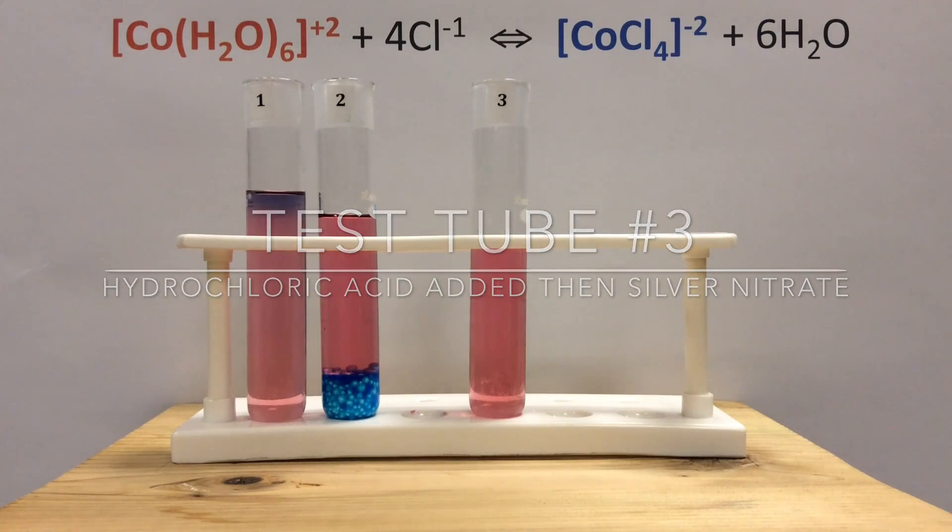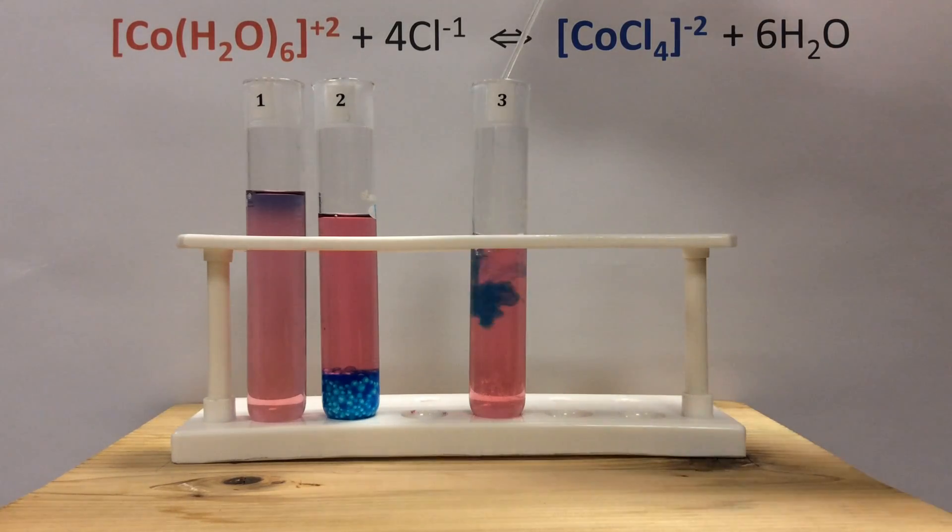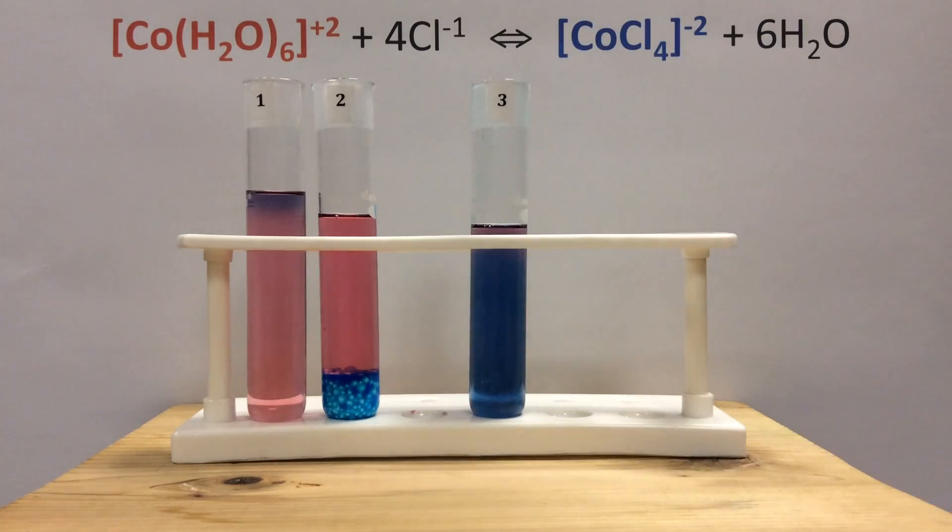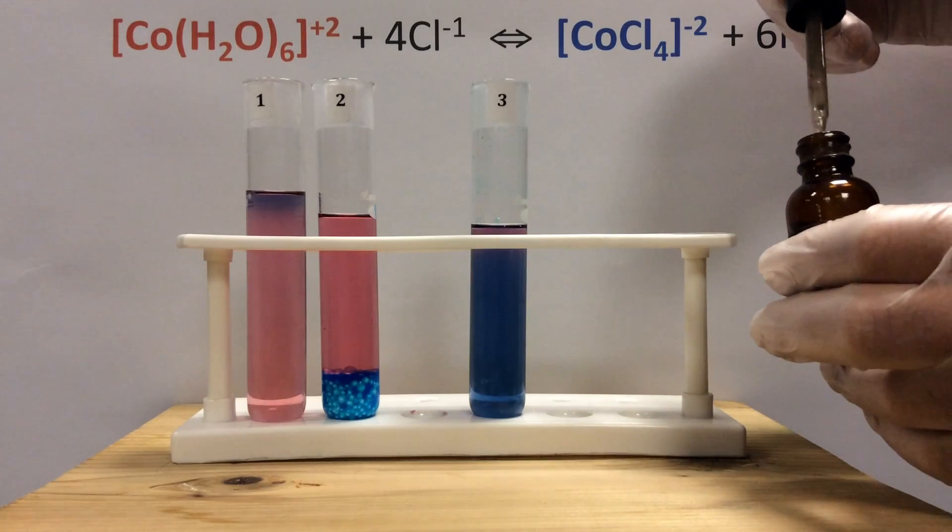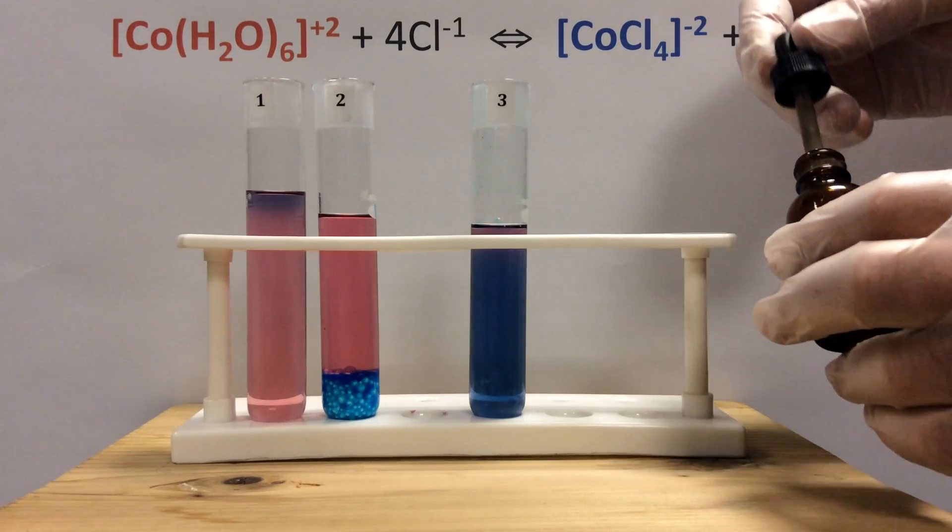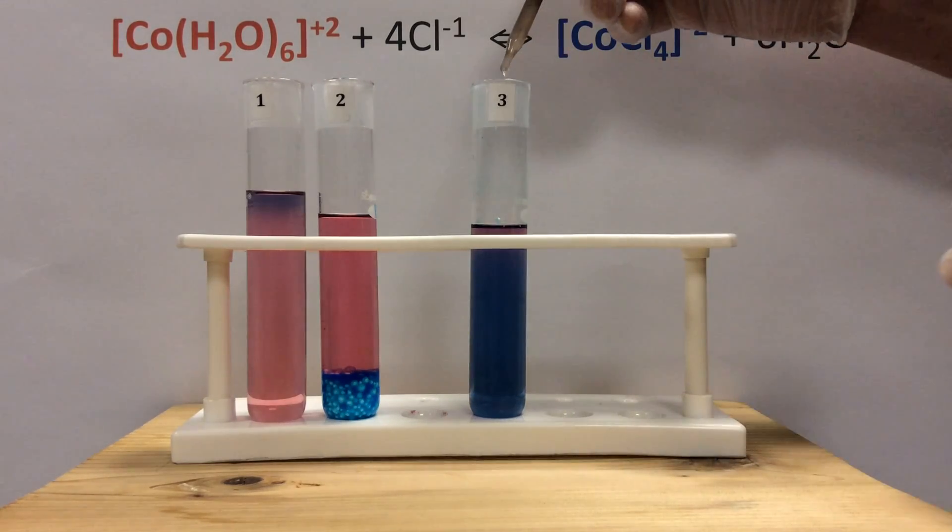Test tube three here, we're going to add hydrochloric acid which we've done already before and we're going to see a shift that favors the cobalt chloride complex. You should know what that shift does. Now part of the same test, we're gonna add some silver nitrate.